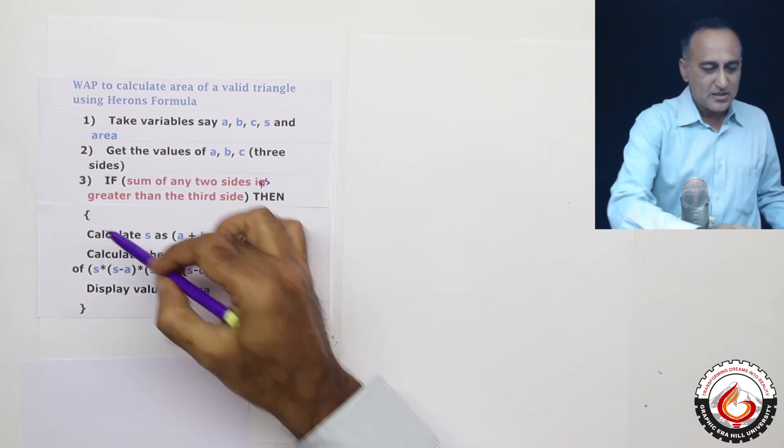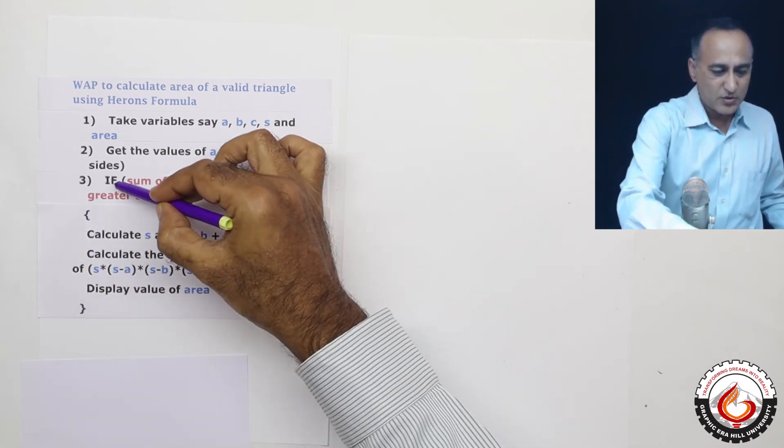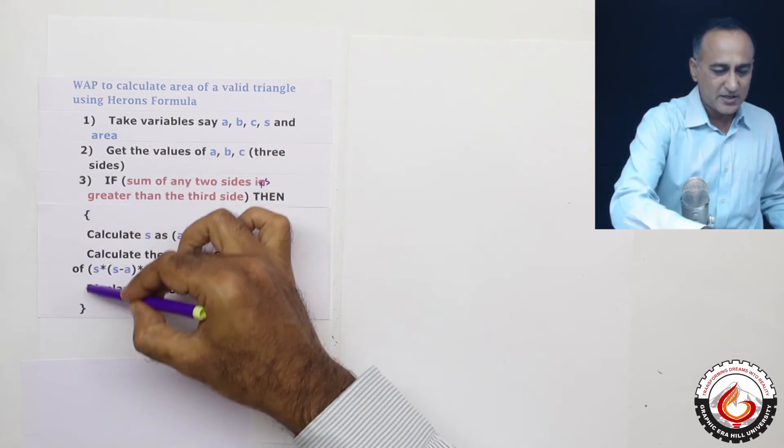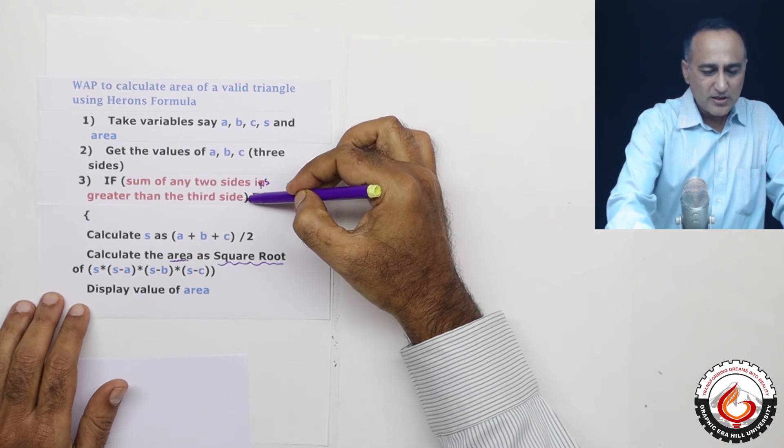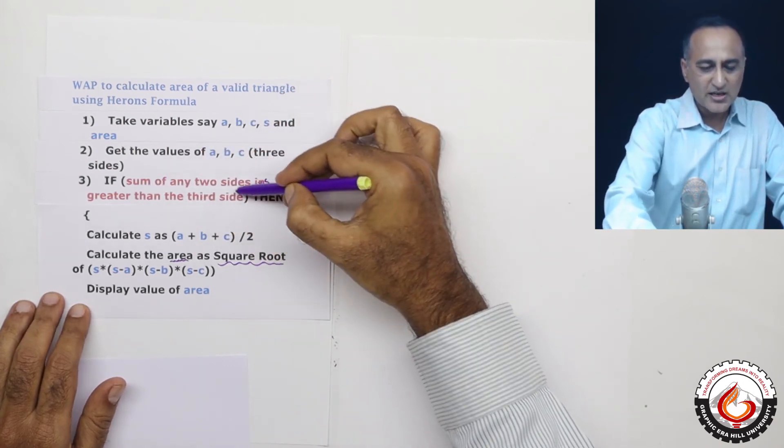Then this block is attached with this if. So this part is attached with this if. So just see how I have written if, within the round brackets whatever condition I am discussing.